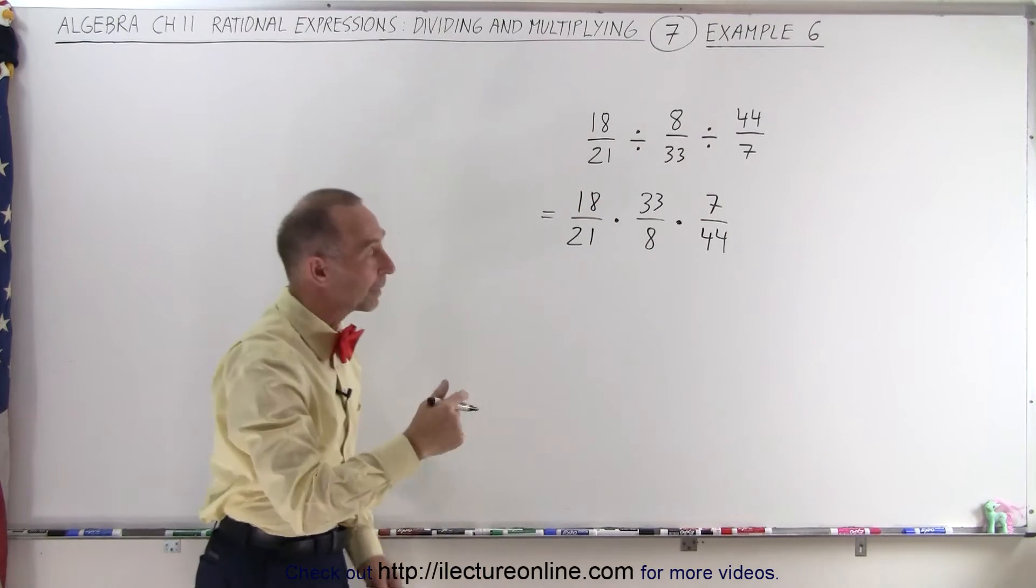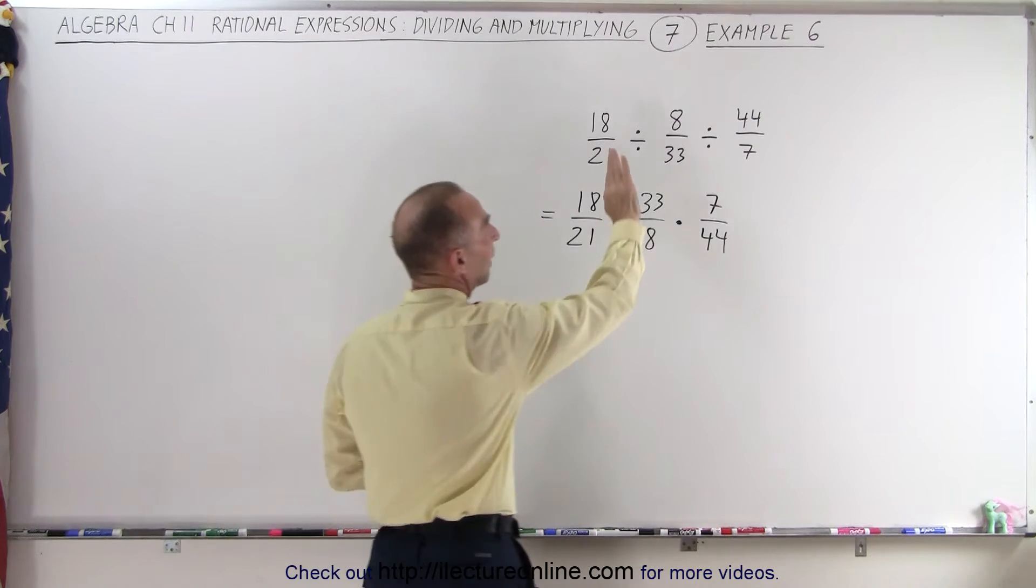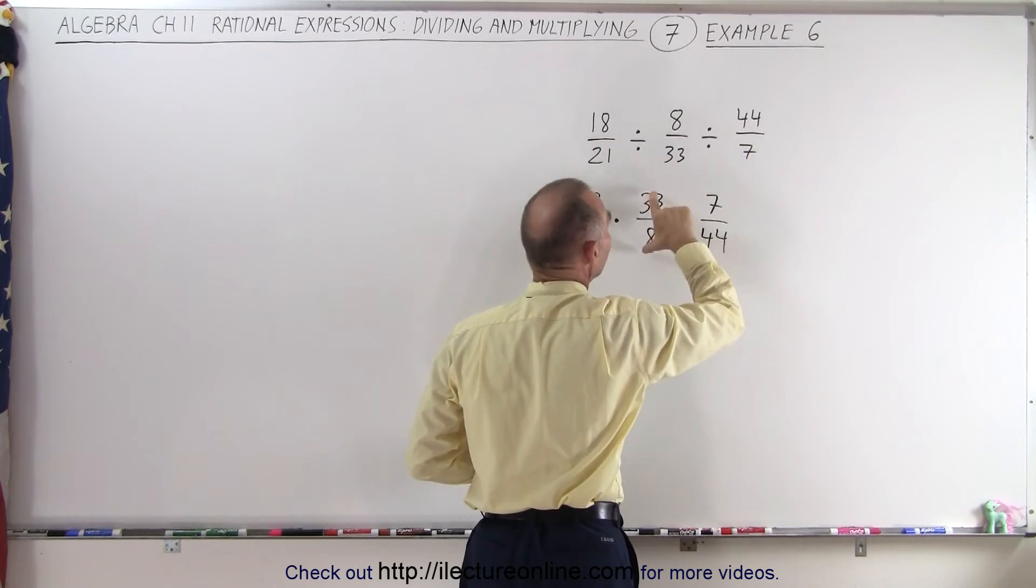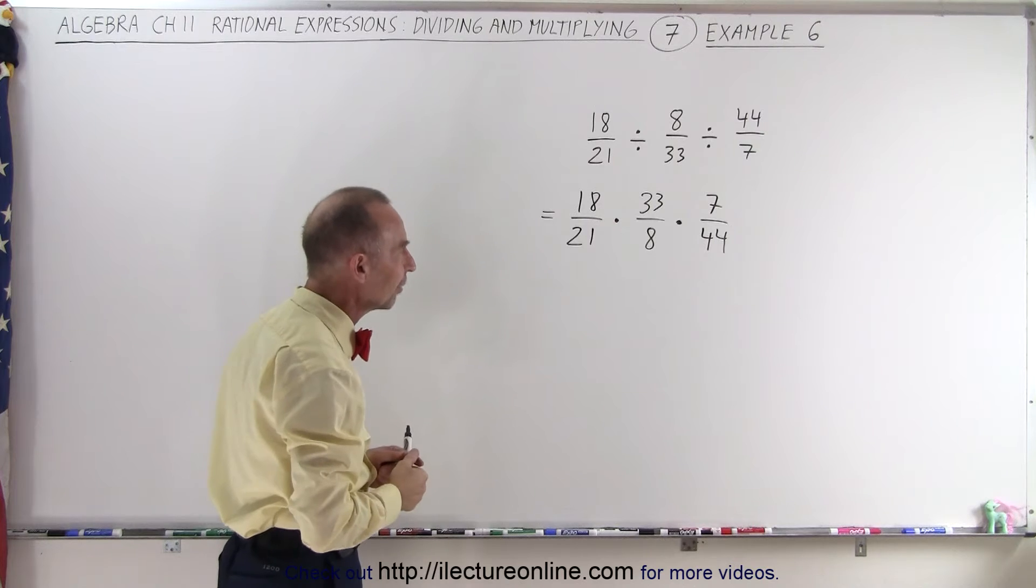change the division to a multiplication, and then take the inverse, not of everything that comes behind it, but only the next fraction. And that is how that's done.